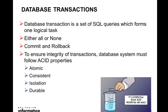Let us start by looking into what database transactions are. A database transaction is a set of SQL queries which forms a logical task. Using database transactions, we can bundle multiple database changes into a single atomic operation — that is, either all operations specified in the transaction are executed, or none of them are executed. Thus, commit and rollback are the two pillars of database transactions.